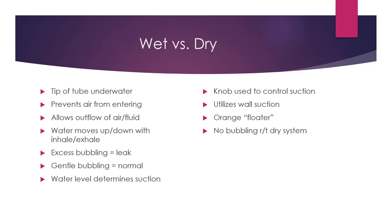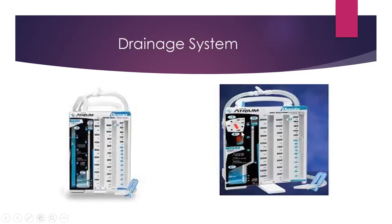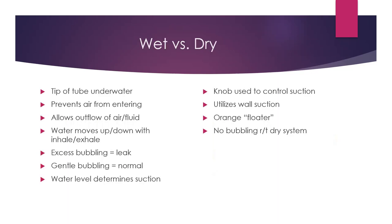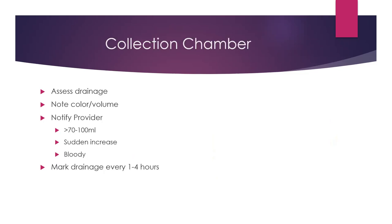Our water level determines how much suction is happening to allow air and fluid to come out. On the dry side, we use wall suction. There is a knob to control the suction and an orange floater — there is no bubbling when it comes to the dry system. The orange floater is located in the E chamber. The dial controls how much pressure you are titrating the system to, and that comes from your provider — nursing school and the NCLEX will not ask you about that.